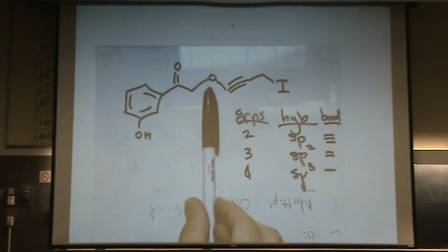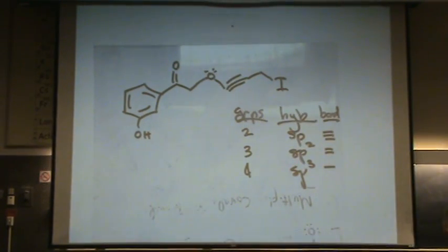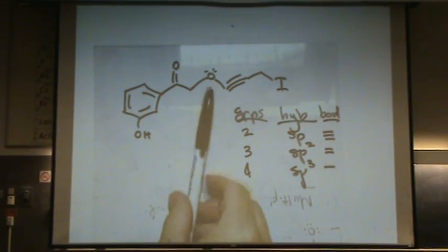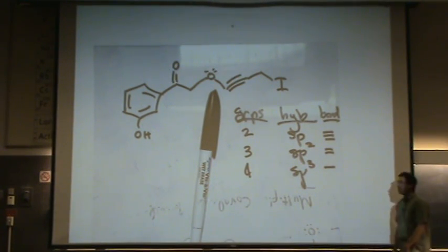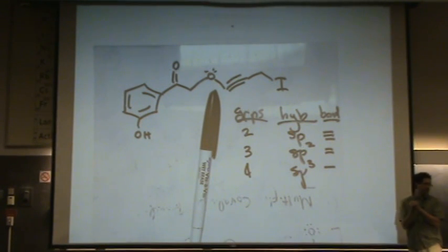Okay, let's do the tough one. You should have said SP3. There's two lone pairs not drawn in. Every carbon, every oxygen will have two lone pairs not drawn in. Every nitrogen will have how many lone pairs not drawn in? One. One.